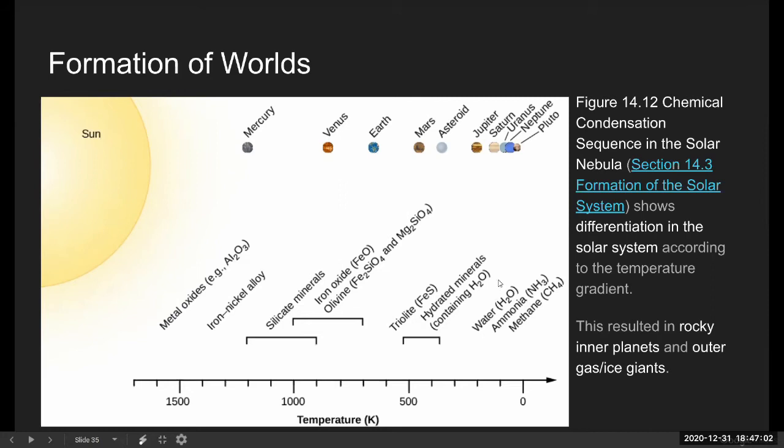And the driving force for the solar system differentiation is the temperature, with the difference in the distance from the sun. And by the way, the scale here is not the scale of distances, it's the scale of temperatures. The outer planets are farther apart from each other. But in the temperature scale...